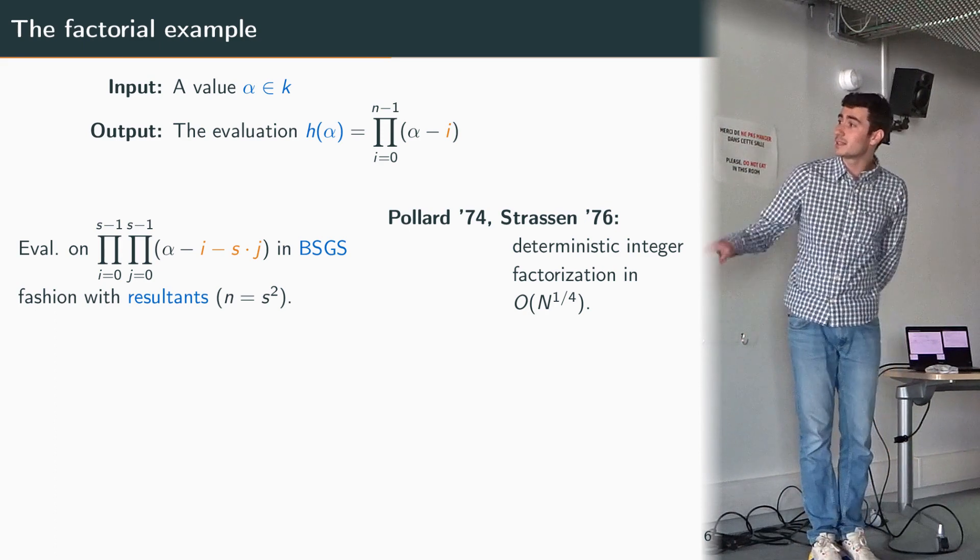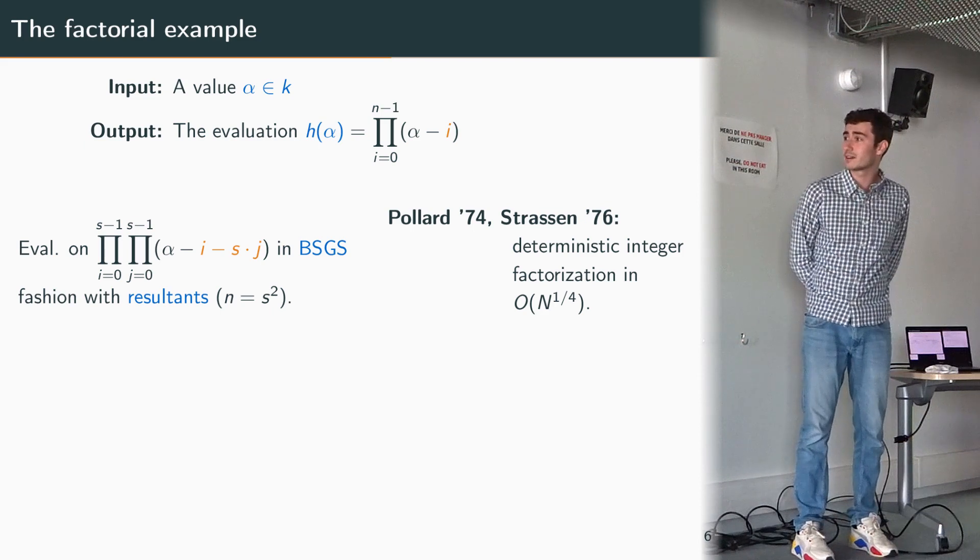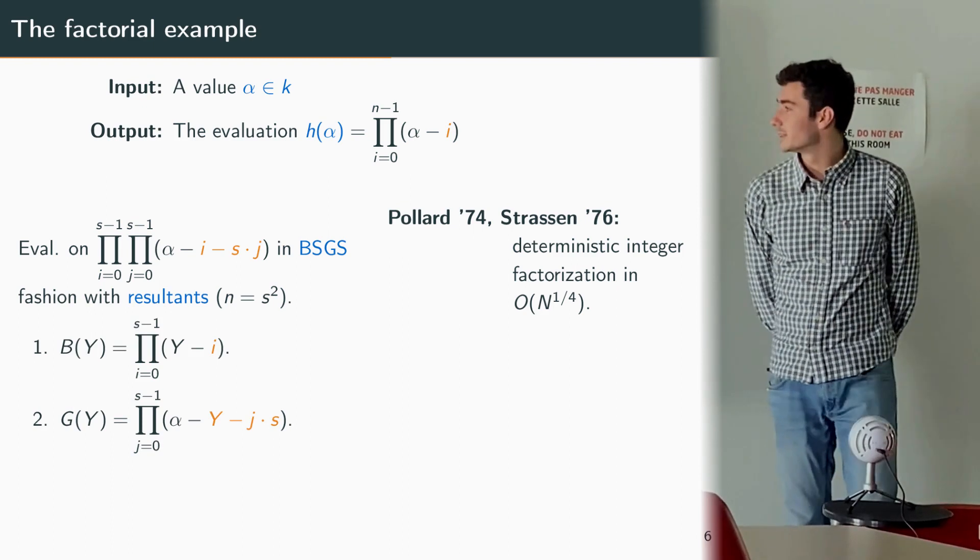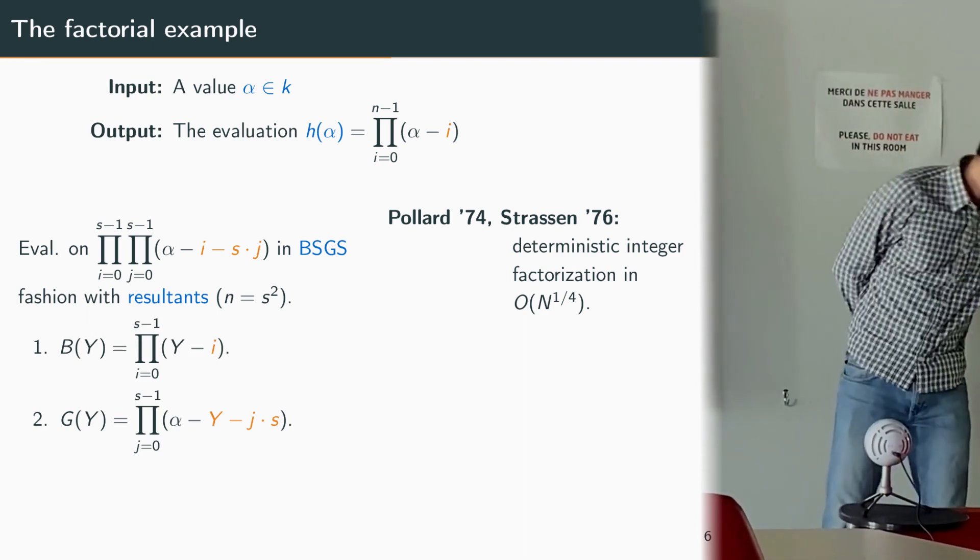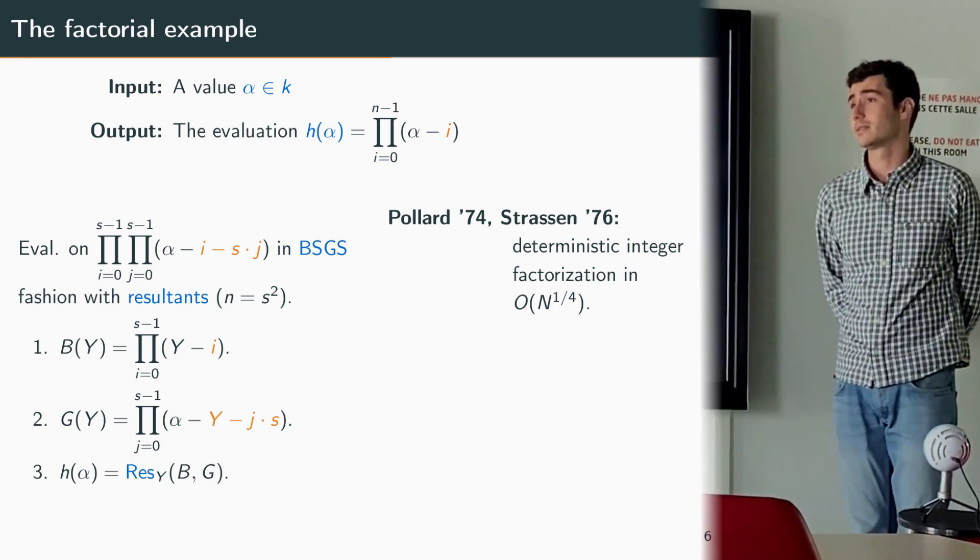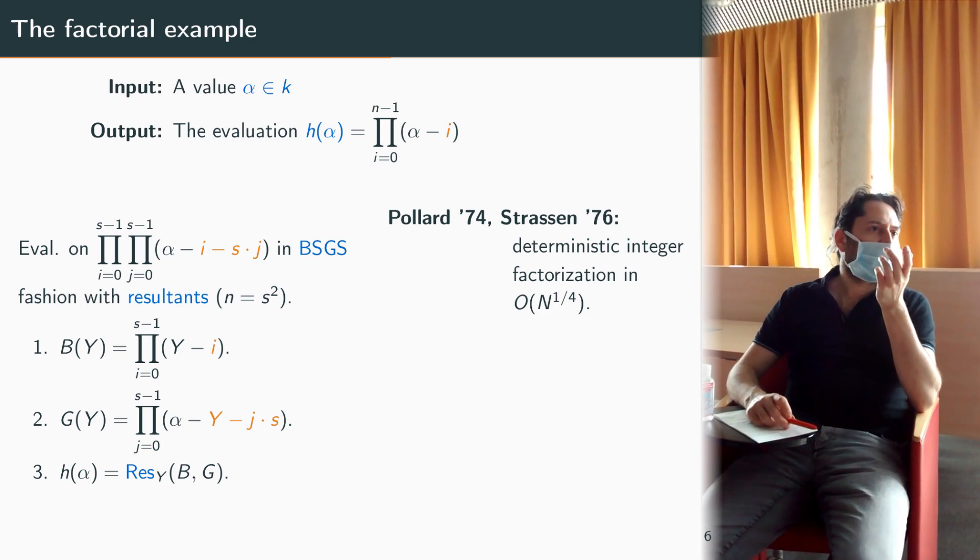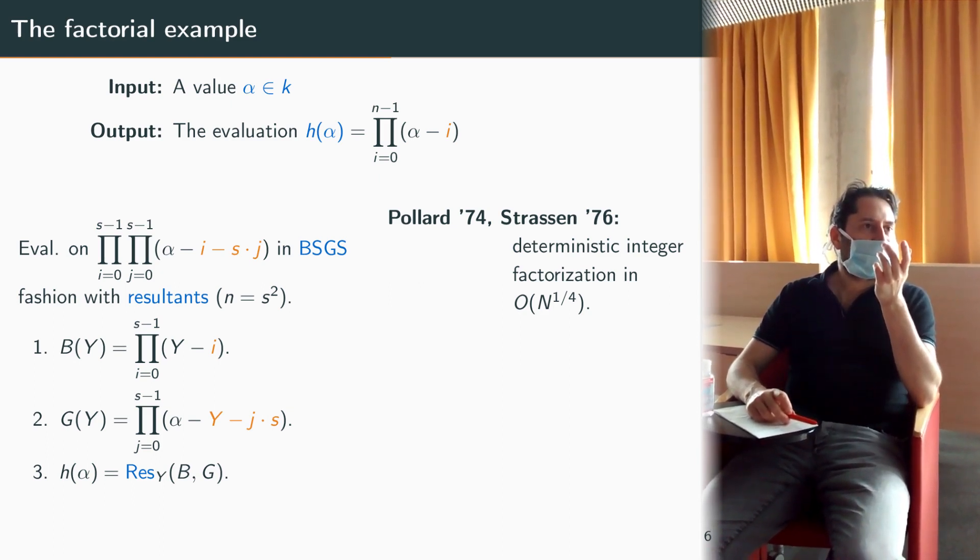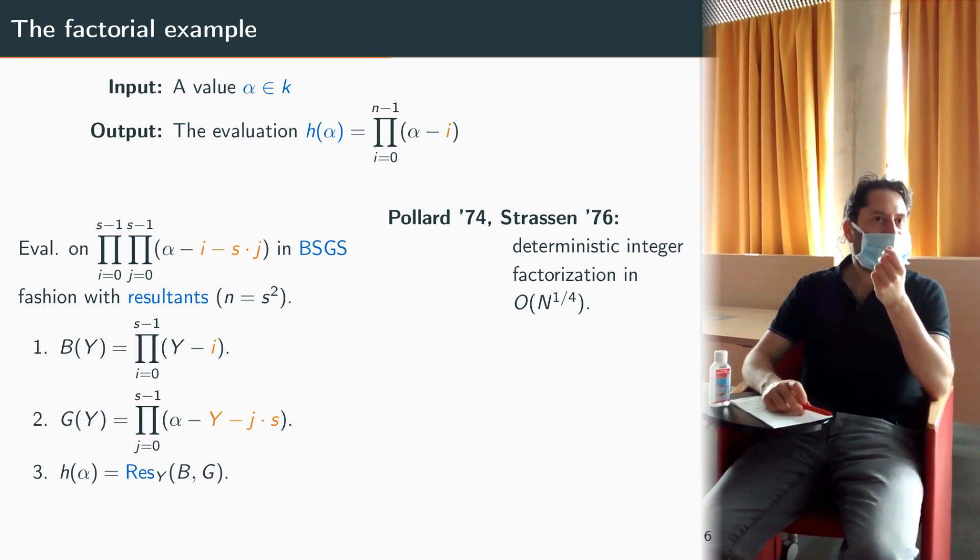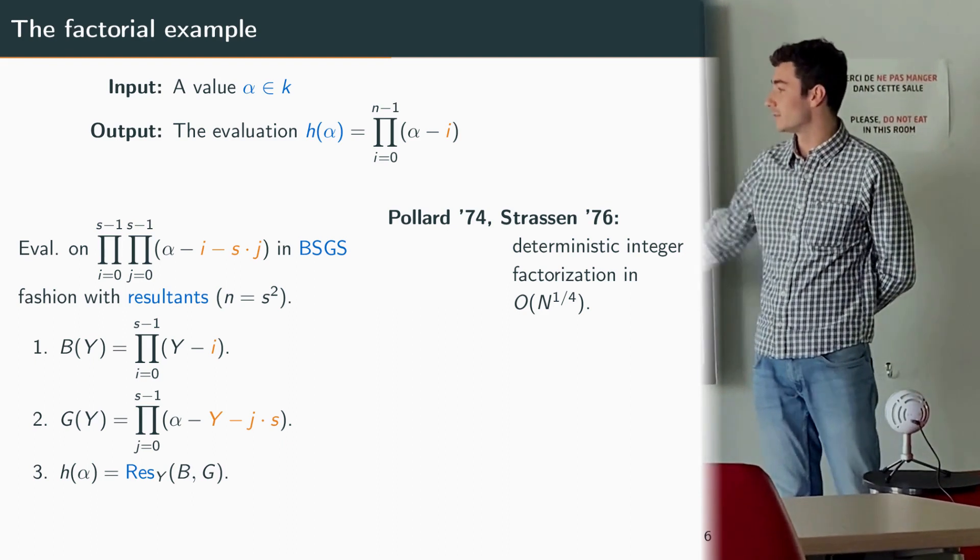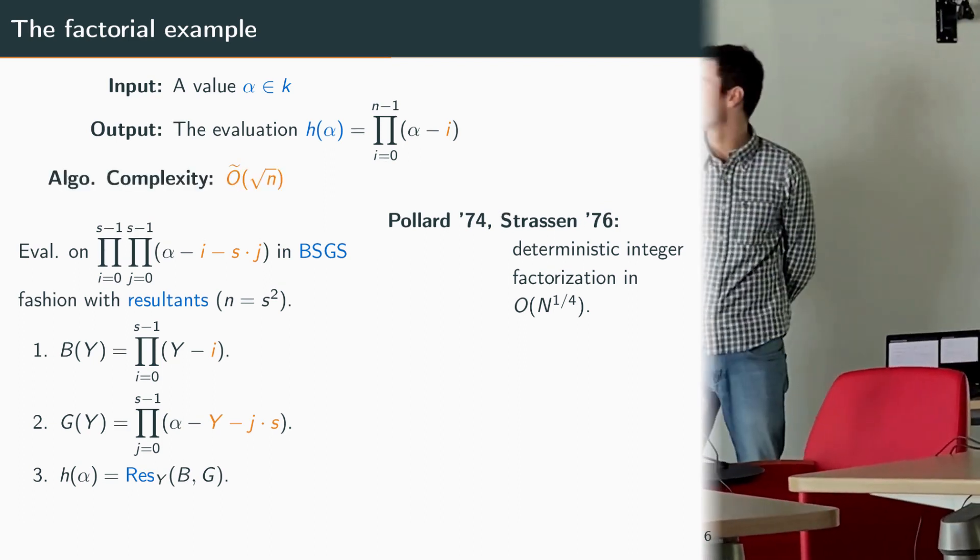For this example I'm assuming that n is equal to s squared, which is of course in contradiction with what I said earlier that I want to look at prime n, but this is just for the sake of simplicity and this method can be adapted easily to any kind of n without changing the asymptotic complexity. The idea is to look at this baby step giant step decomposition with these indices i and j, and then we'll be able to compute the value h of alpha using resultants. So our idea is to use these two baby step and giant step polynomials here whose degree is s.